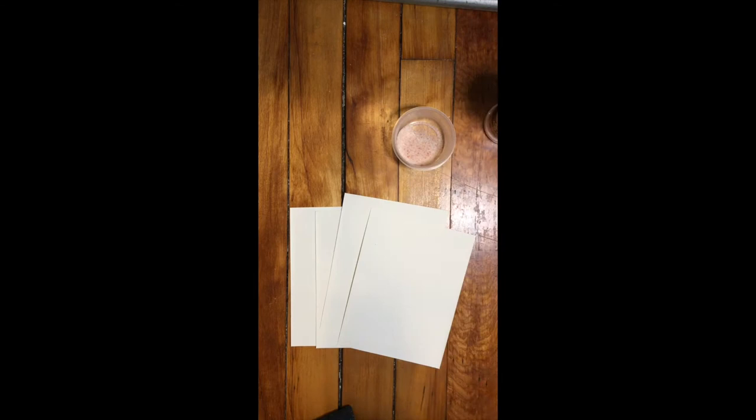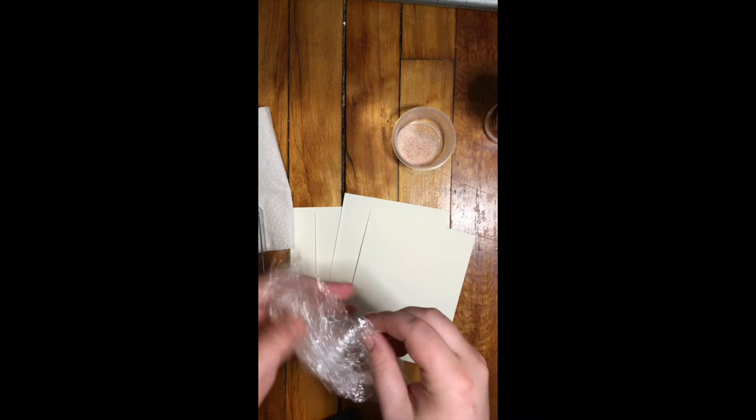Alright, let's make sure we have everything. We need our four sheets of watercolor paper, a little cup of water, some salt, our watercolors with our watercolor brush, a paper towel, and our piece of plastic wrap.